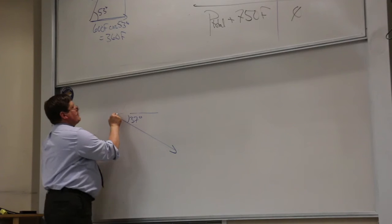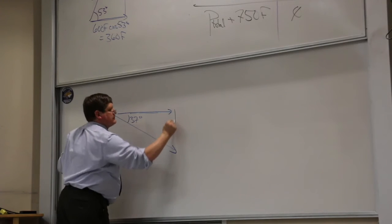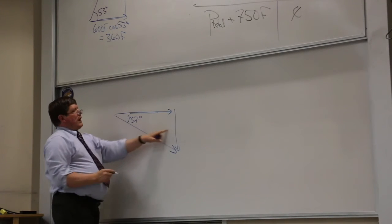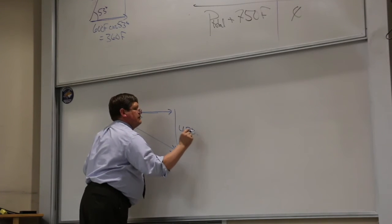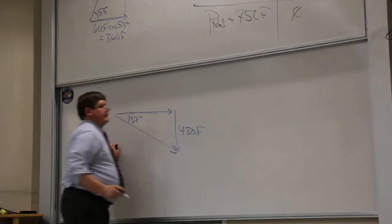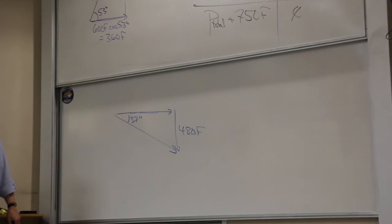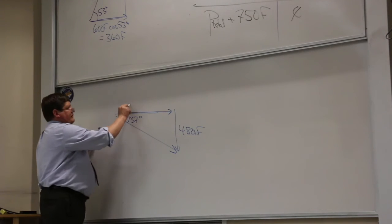So that means that when I break up this vector, the Y part has to be 480 down. But I don't know what this X part is.